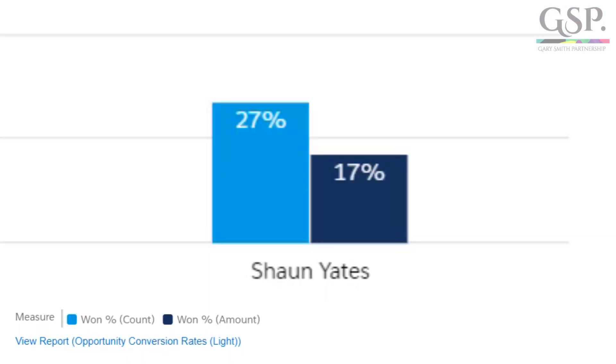Now, both of those two measures are important when it comes to analysing salesperson performance. If we take Sean here as an example, we can see this year he's won 27% of his opportunities. The second column in the darker blue is his win rate by dollar value, and he's won 17% of his opportunities by value. It is important to remember that, like any other dashboard chart or report, the conversion rate doesn't tell us the answer — rather, it tells us what questions to ask.